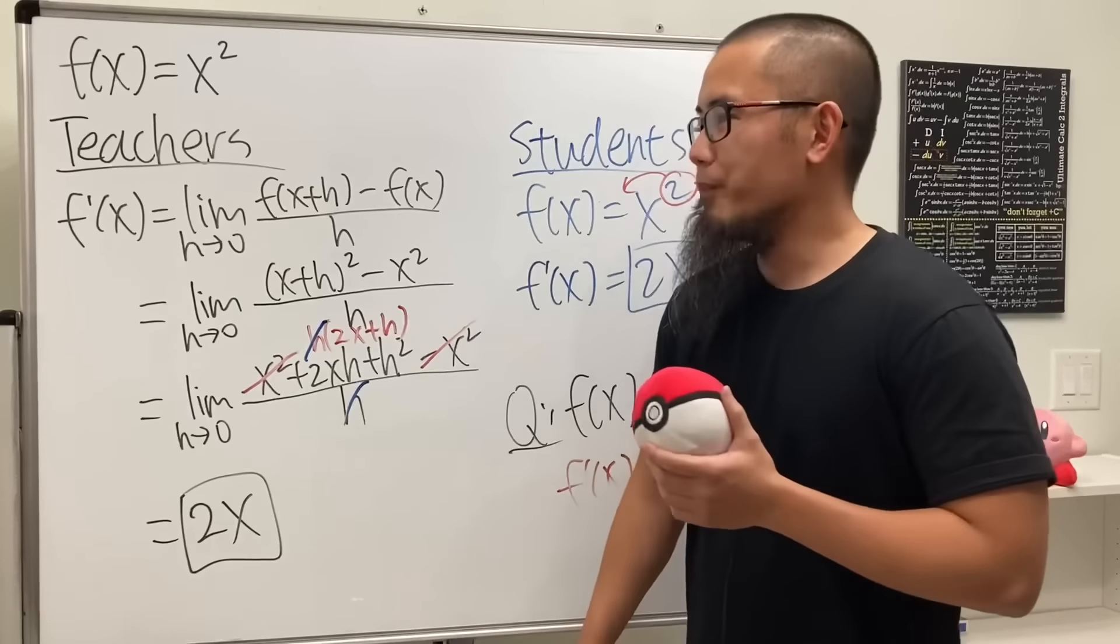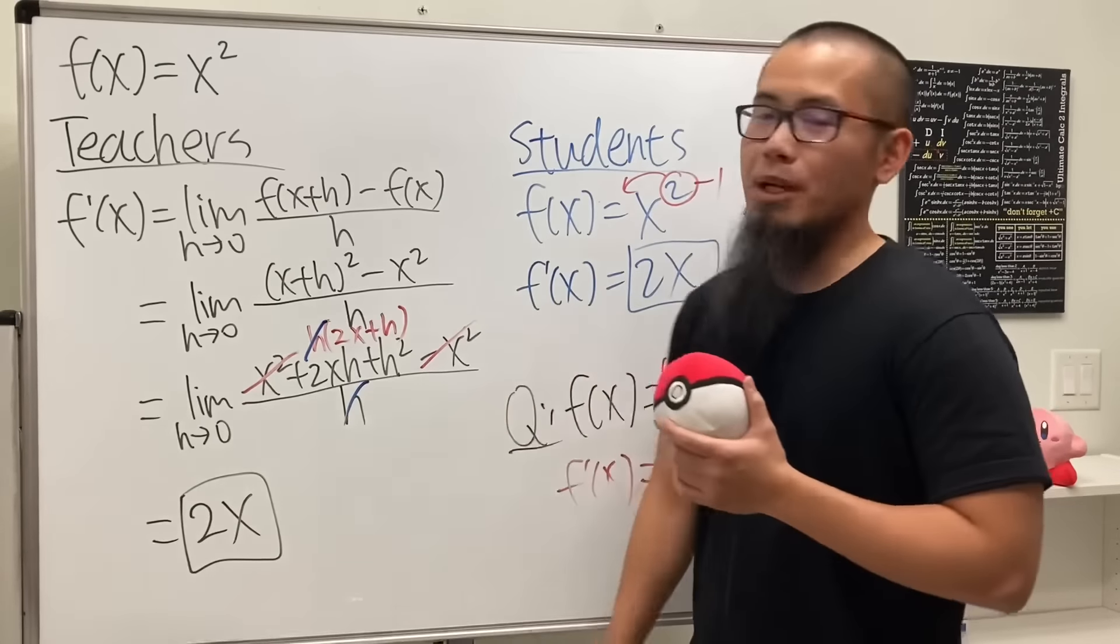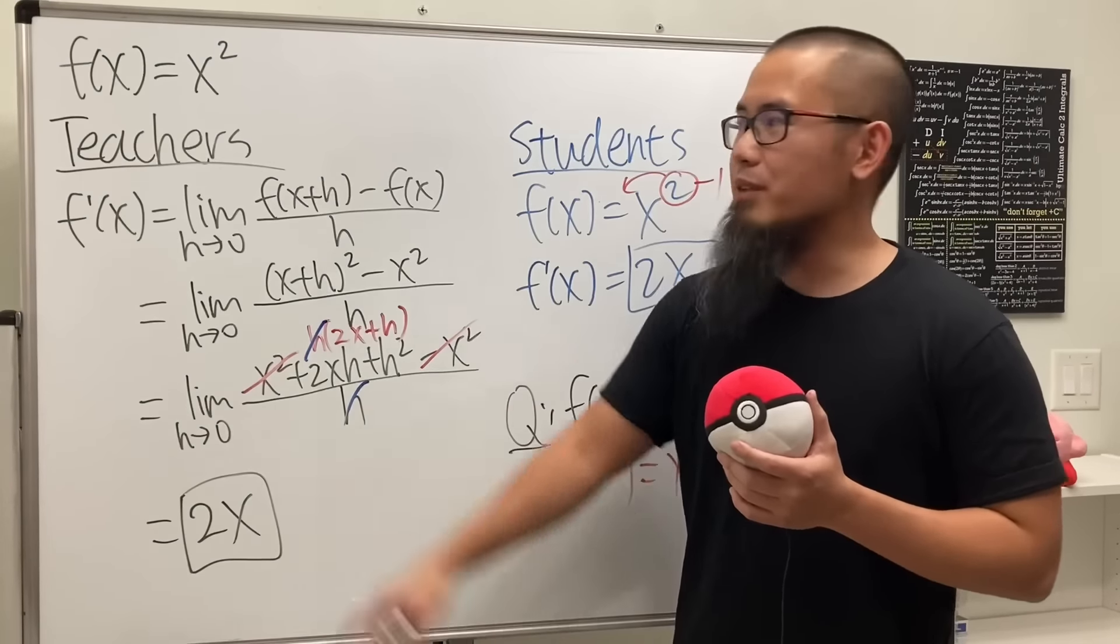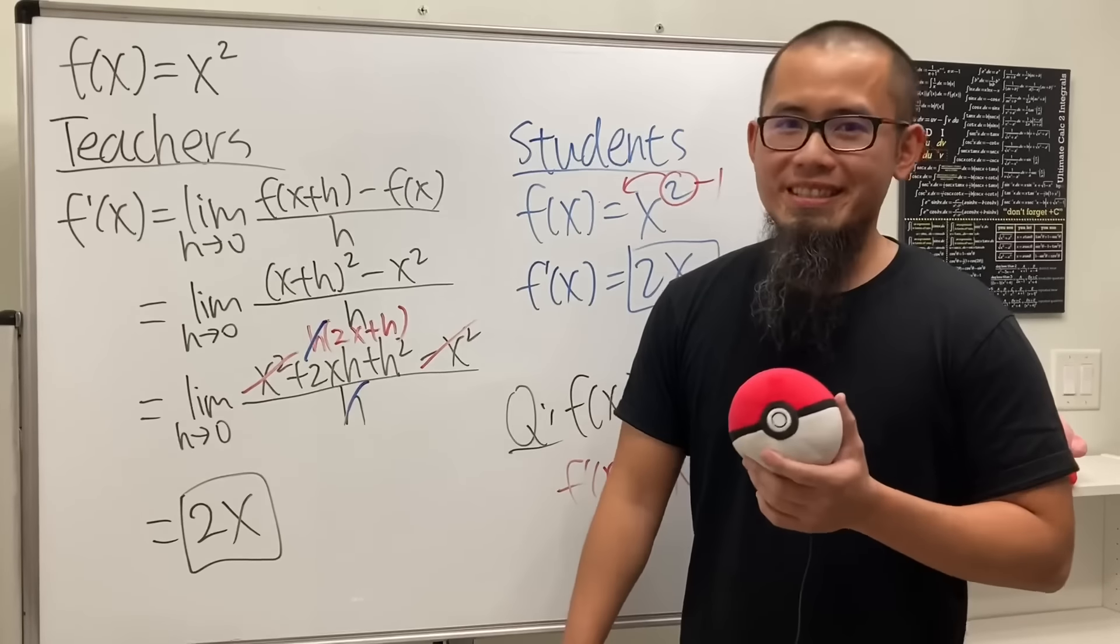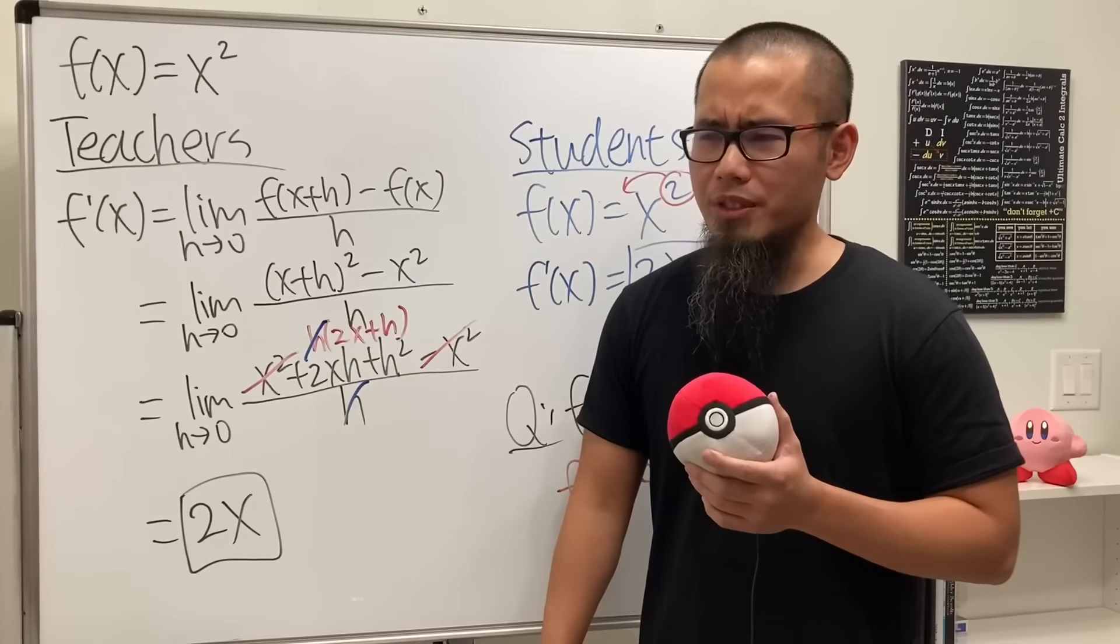But anyway, I do have to admit this is definitely much quicker. Of course if I have to do this question on the street, I will use the power rule 100%, right? But this gives me a question.